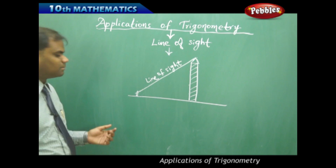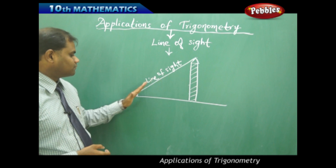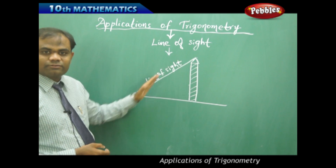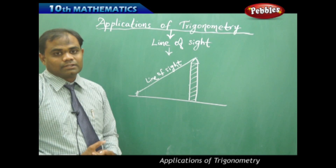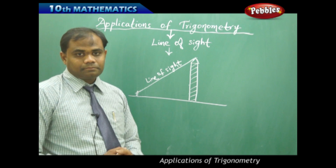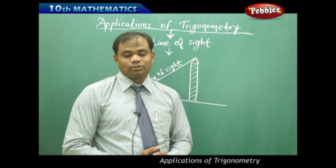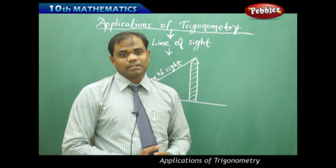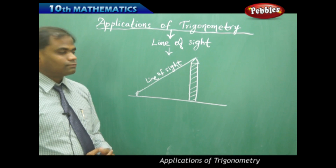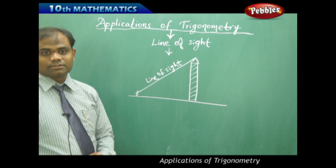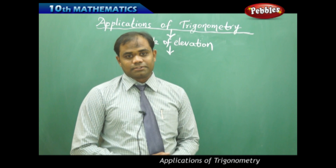The line of sight can be in any direction. If I look straight, this is the line of sight. If I look straight up, the line of sight is upward. If I look down, the line of sight is downwards. Ultimately, the eye contact I make with the desired object — the distance between them — is called the line of sight. The line of sight derives two basic definitions.